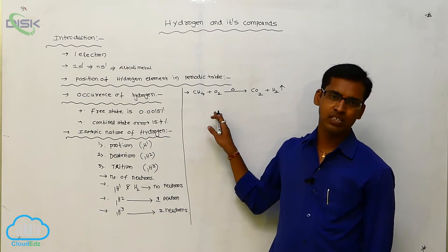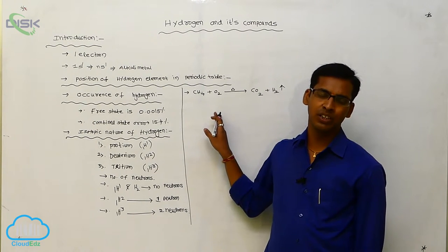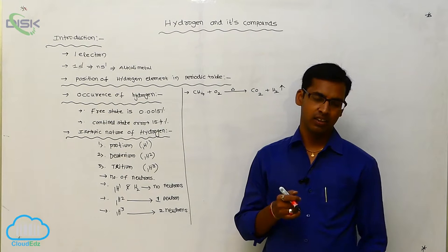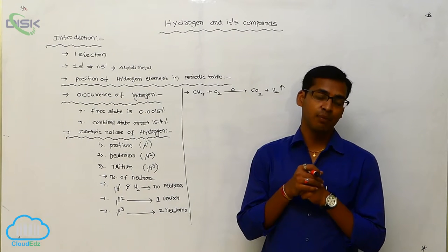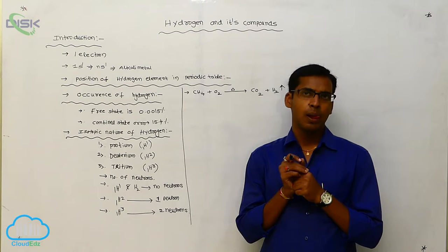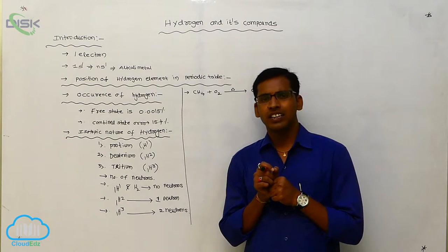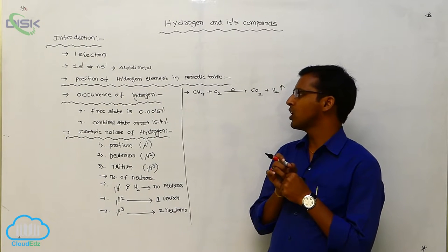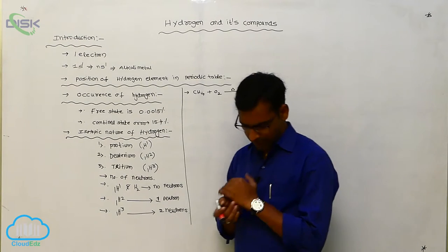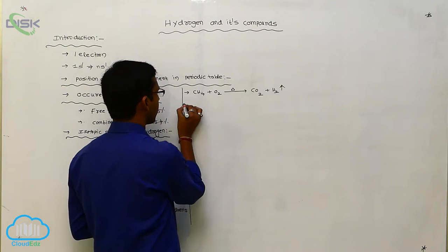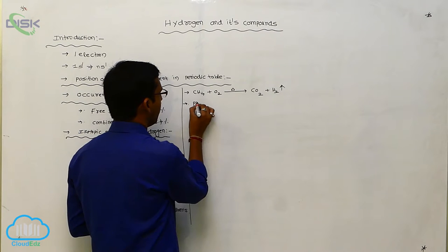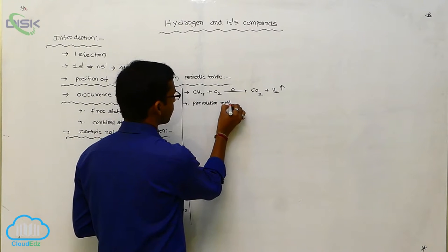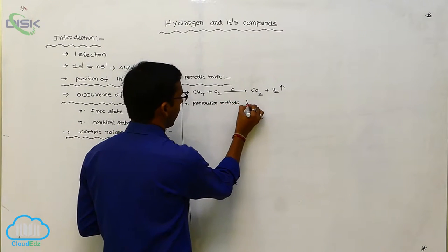Hydrogen gas is also liberated during the electrolysis of sodium hydroxide by the Castner-Kellner method. These are the occurrence and isotopic nature of hydrogen, and its position in the periodic table. Next is the preparation methods of hydrogen.